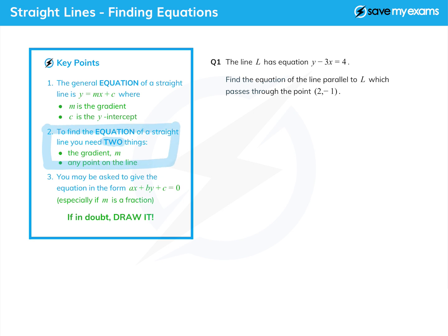We need the gradient m, which we need to find from the question somehow, and any point on the line. If it happens to be the y-intercept, that's great because then we can just write it down, but normally we have to work a little harder.